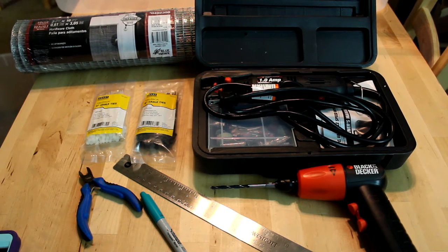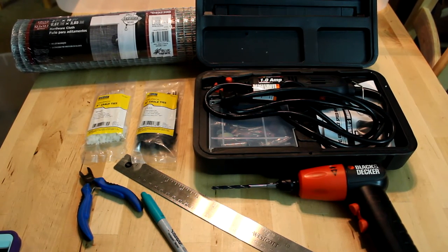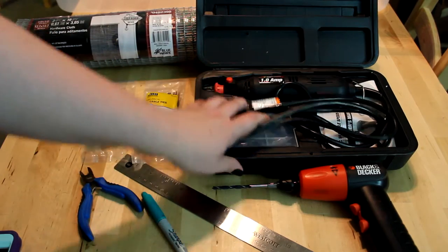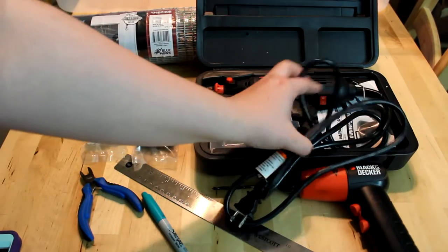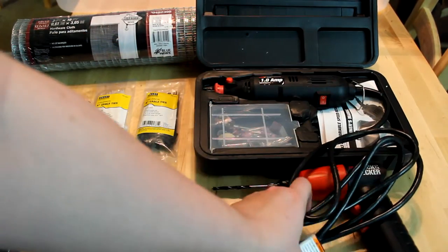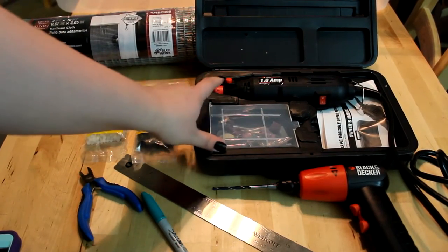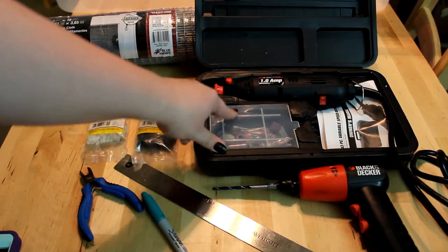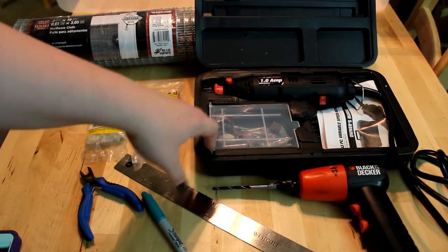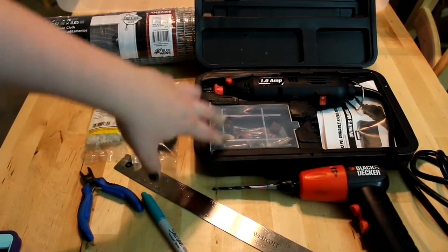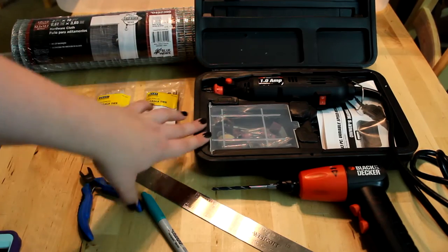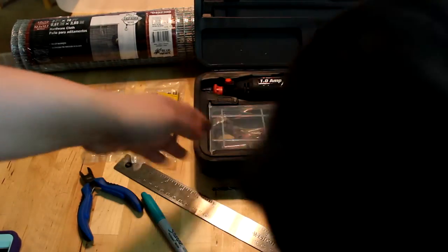So the things I'm using, first and foremost, is a Dremel. Now you can use pretty much anything to cut through the bins. I've found that a Dremel works the best. I have both the cutting tool and the sanding tool. If you only have the cutting tool, you'll need sandpaper.